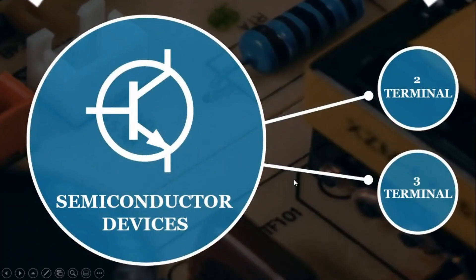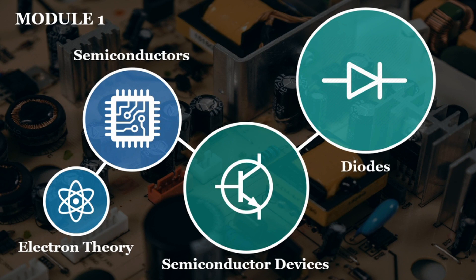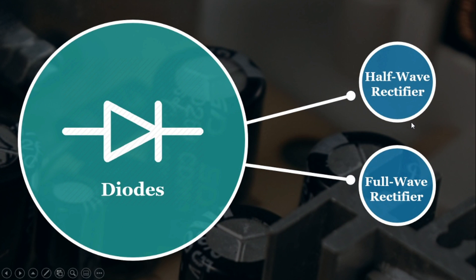And lastly, this module covers diodes, which includes an explanation of the constructional features, operating principle, characteristics, and specification of power semiconductor diodes. It also includes understanding the basic operation of diodes in AC circuits and solutions to basic problems in half-wave and full-wave rectifier circuits.